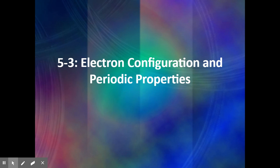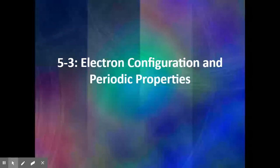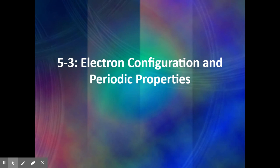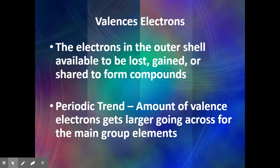In section 5.3 we are going to look at electron configuration, periodic properties, and trends that we can see in the periodic table. First of all we're going to look at valence electrons. Valence electrons are very important — we will use these going forward in many different chapters.